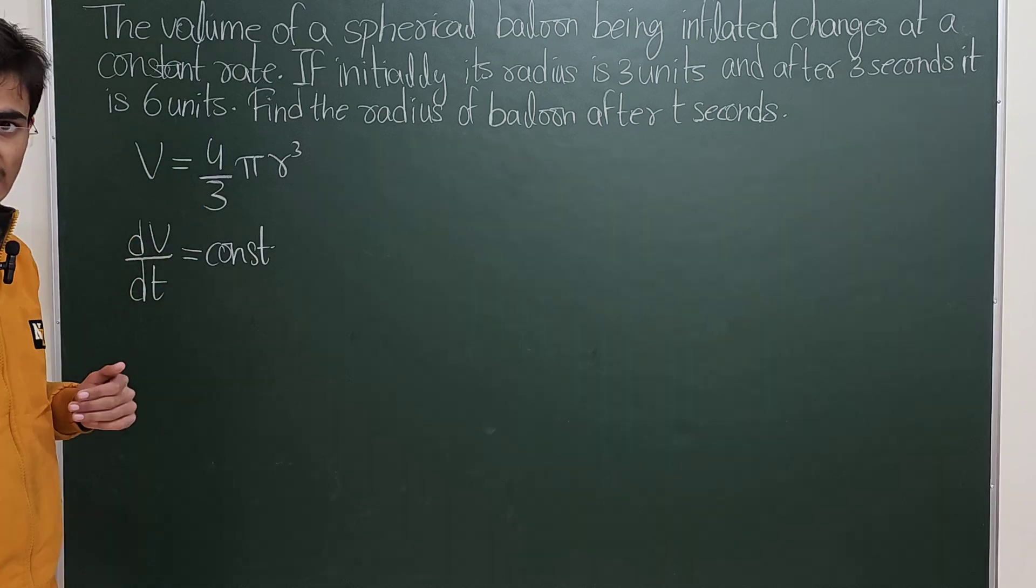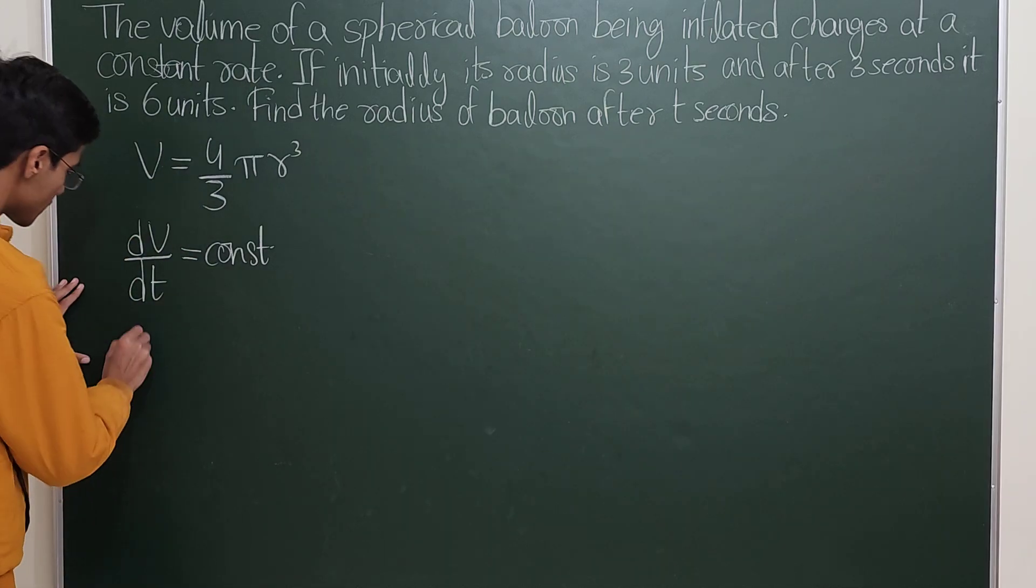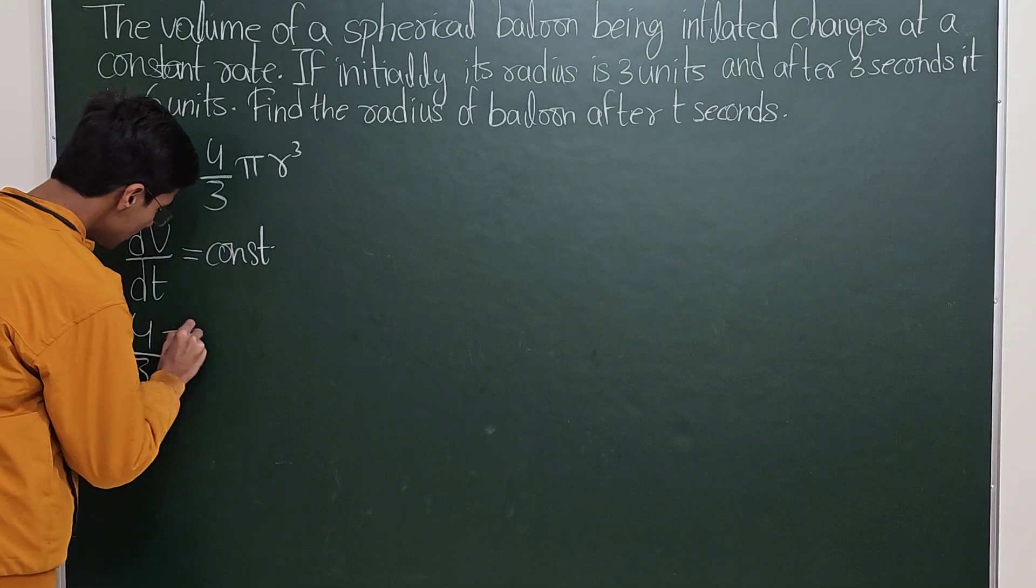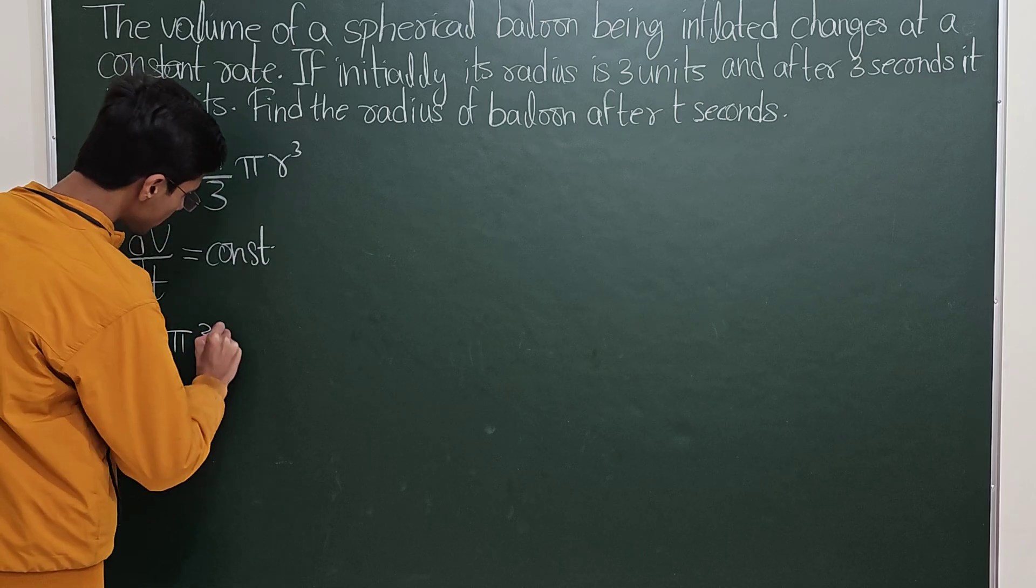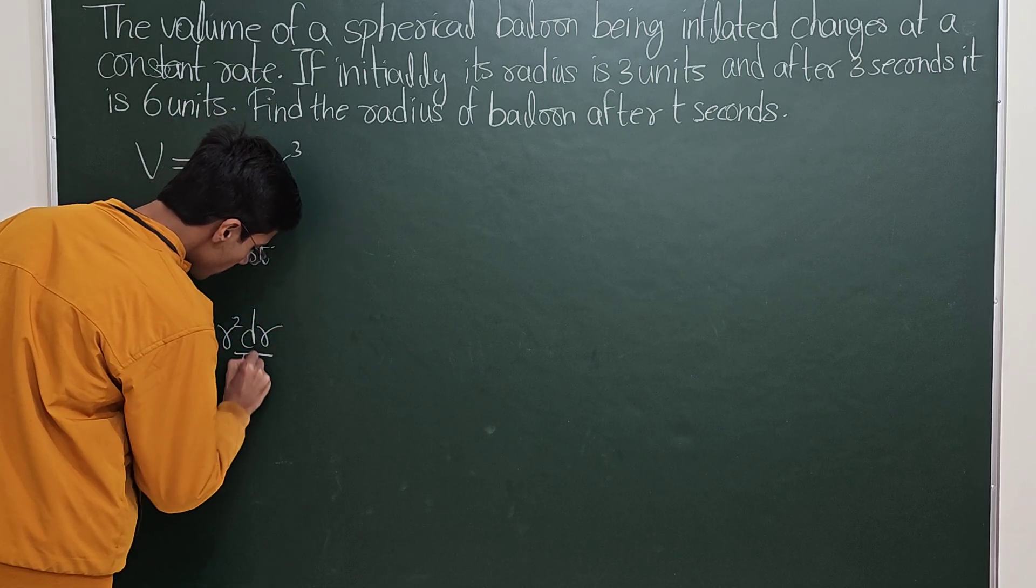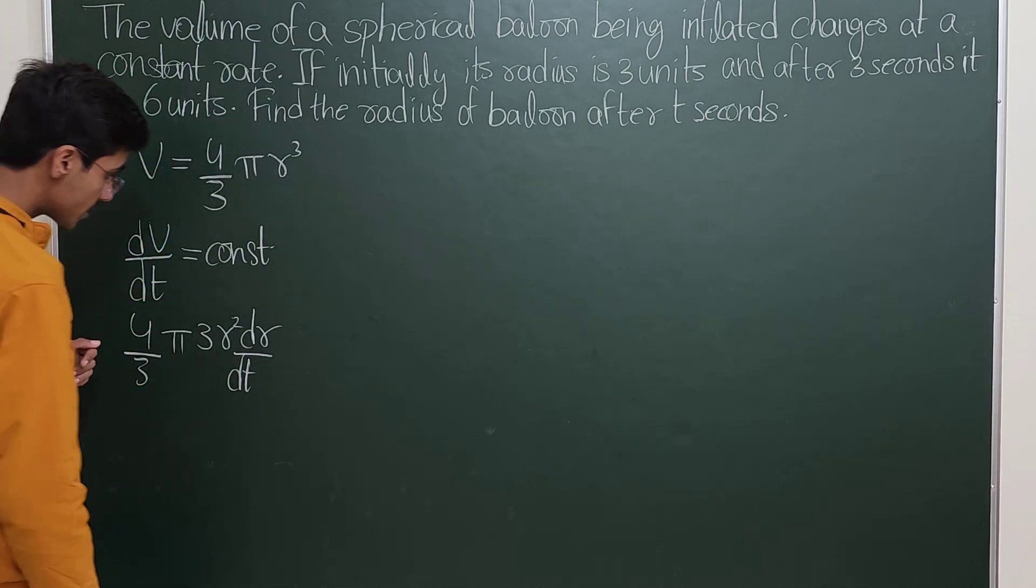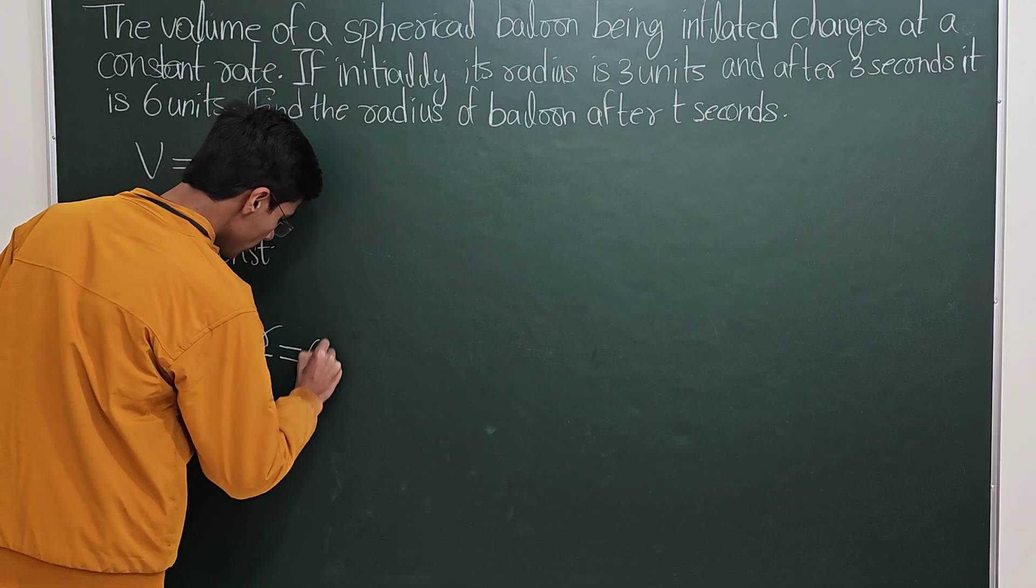Now if I calculate the time derivative, this will come out to be 4/3 π times 3r² dr/dt upon using the chain rule of differentiation, which should be a constant.